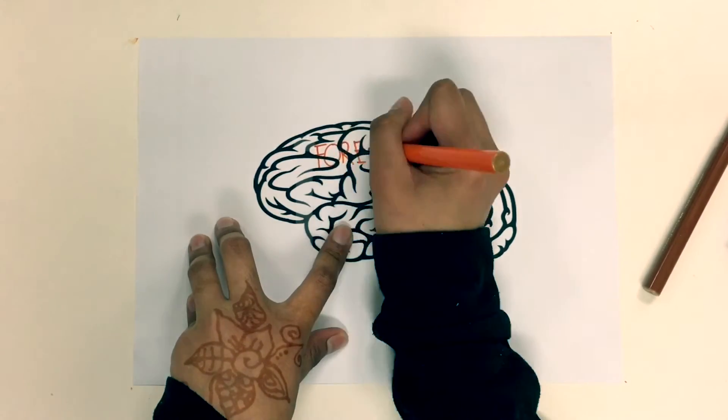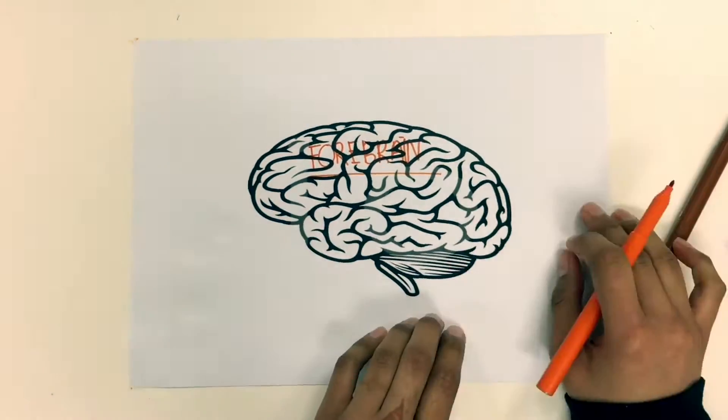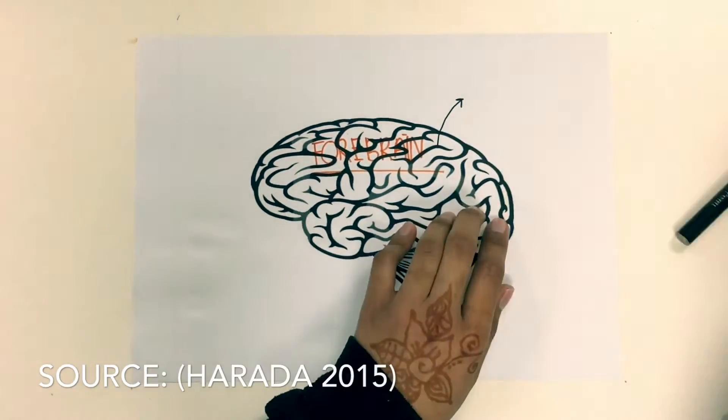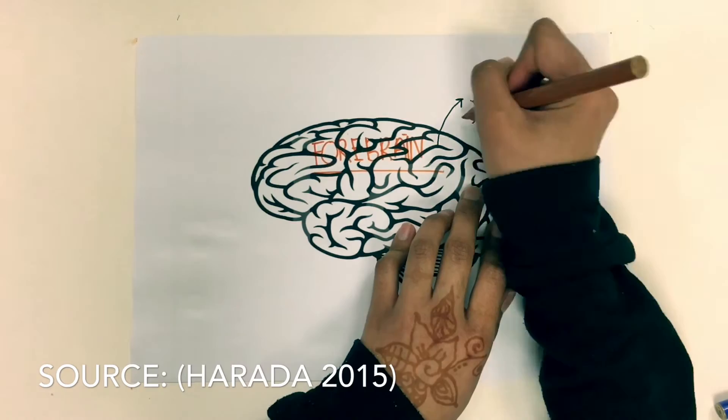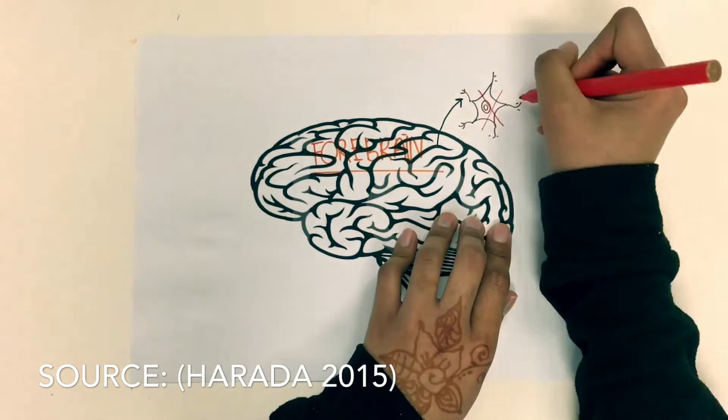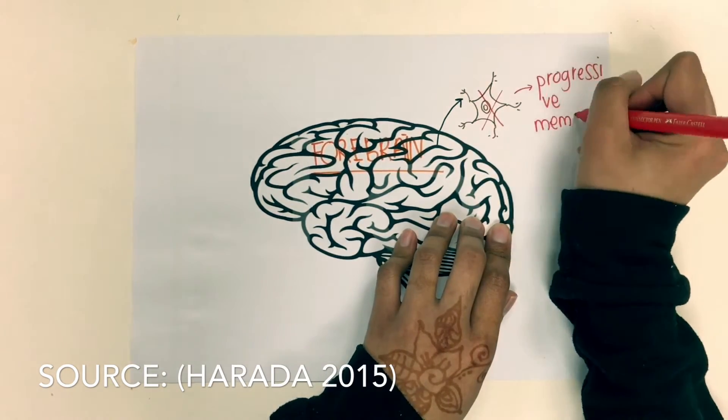CRISPR gene editing can be applied to treat many diseases such as Alzheimer's disease. Alzheimer's disease is caused by many factors, for example environmental factors, abnormal function of neurons, and also death of neurons in the cerebral brain that leads to progressive memory loss.